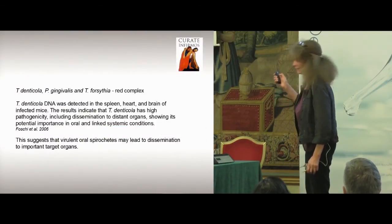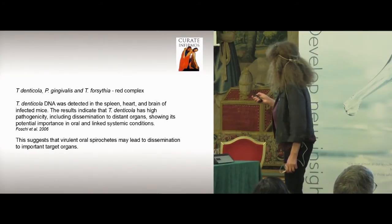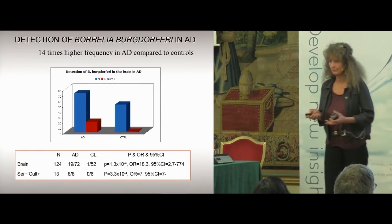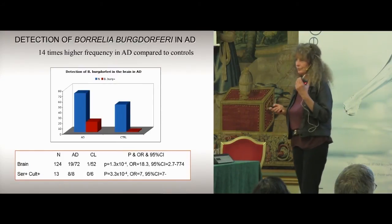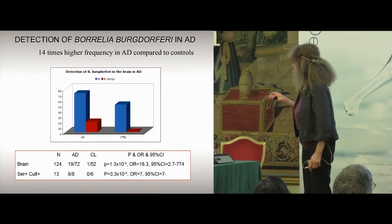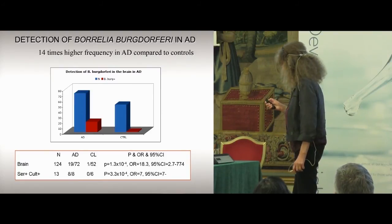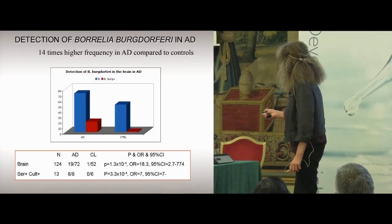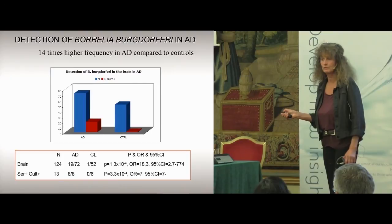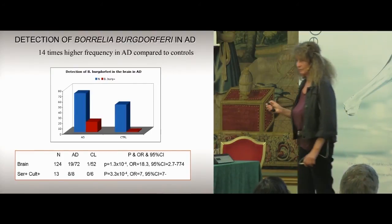The same association is very strong for Borrelia burgdorferi. There were several authors who have tried to show the Borrelia burgdorferi, and with respect to the association, it is also significant. It is about 14 times higher in Alzheimer's disease — the presence of Borrelia burgdorferi — than in the controls. The risk factor is very high.